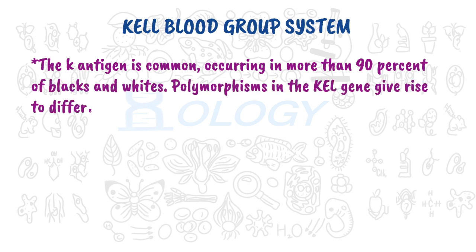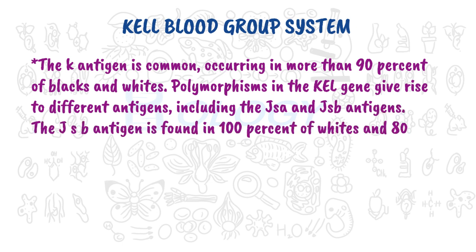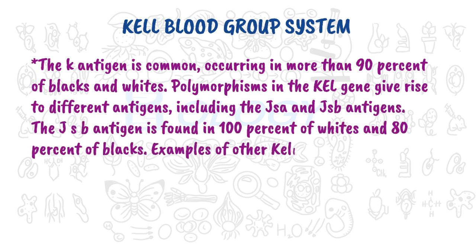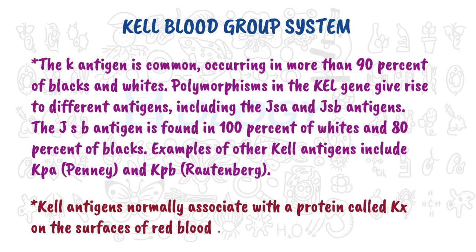Polymorphisms in the Kel gene give rise to different antigens, including the Jsa and Jsb antigens. The Jsb antigen is found in 100 percent of whites and 80 percent of blacks. Examples of other Kell antigens include Kpa (Penny) and Kpb (Rautenberg). Kell antigens normally associate with a protein called Kx on the surfaces of red blood cells.